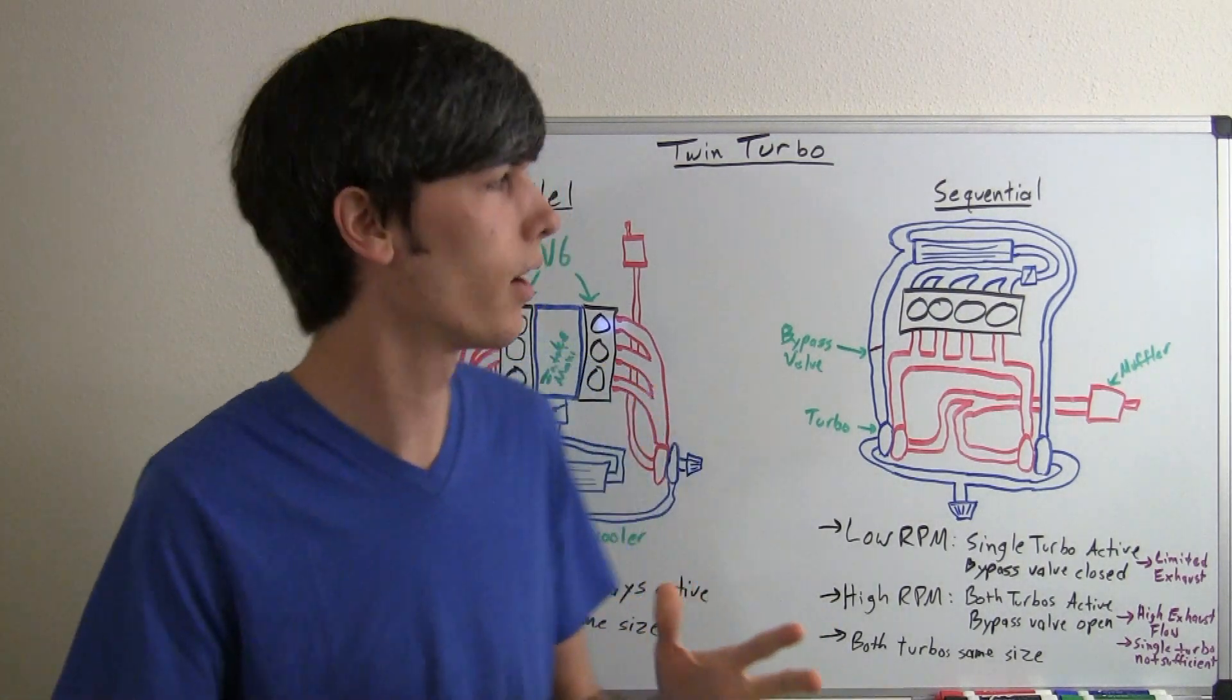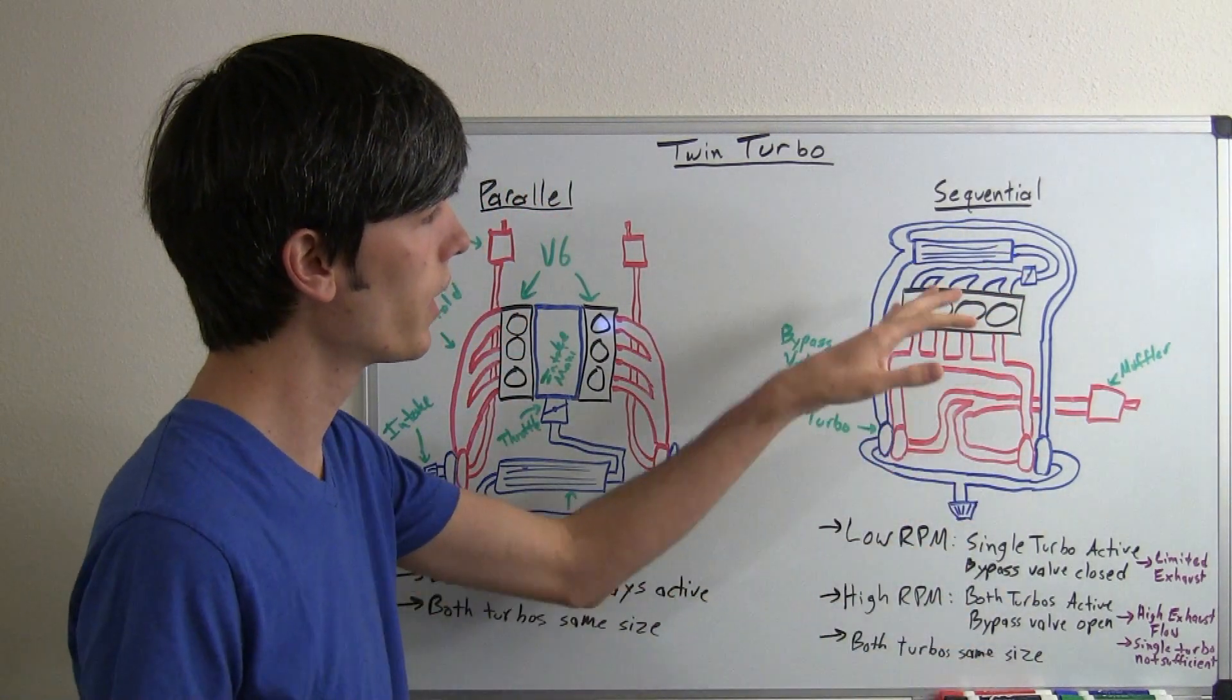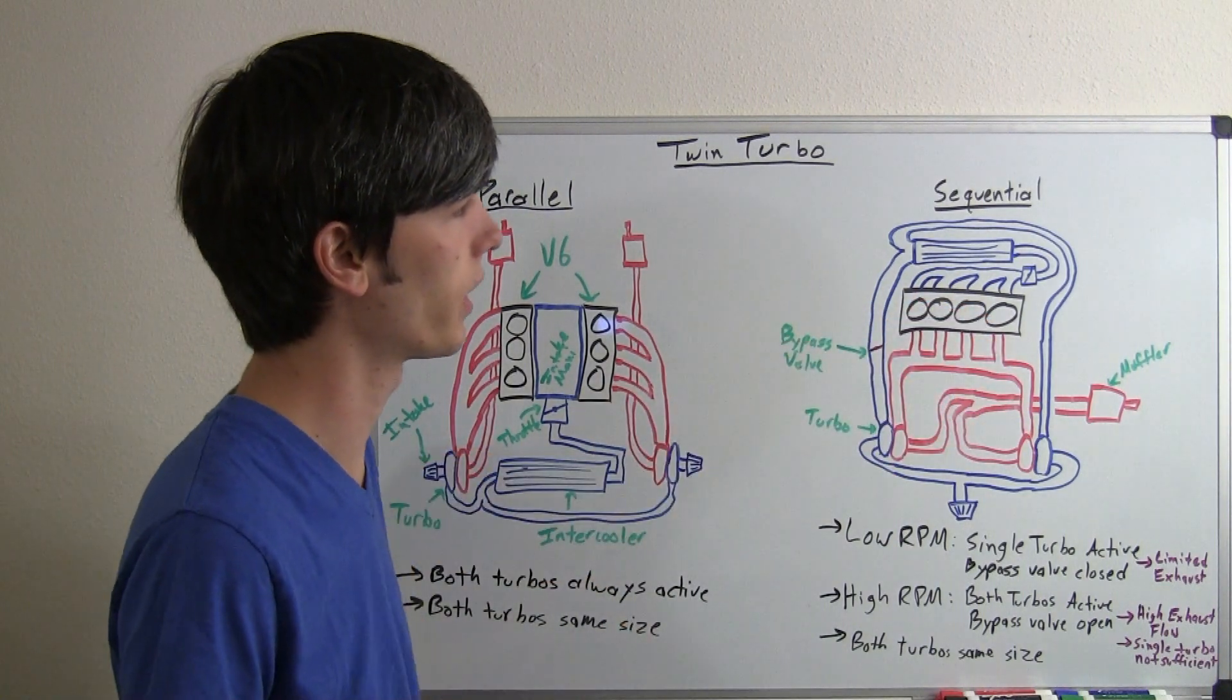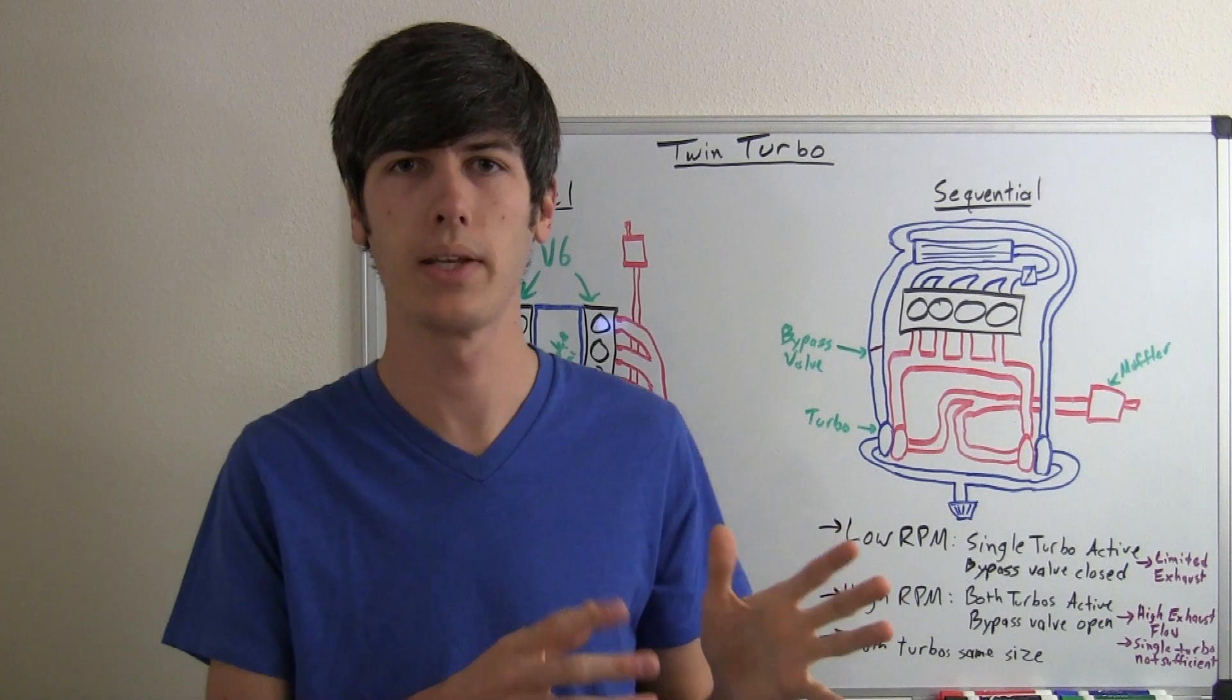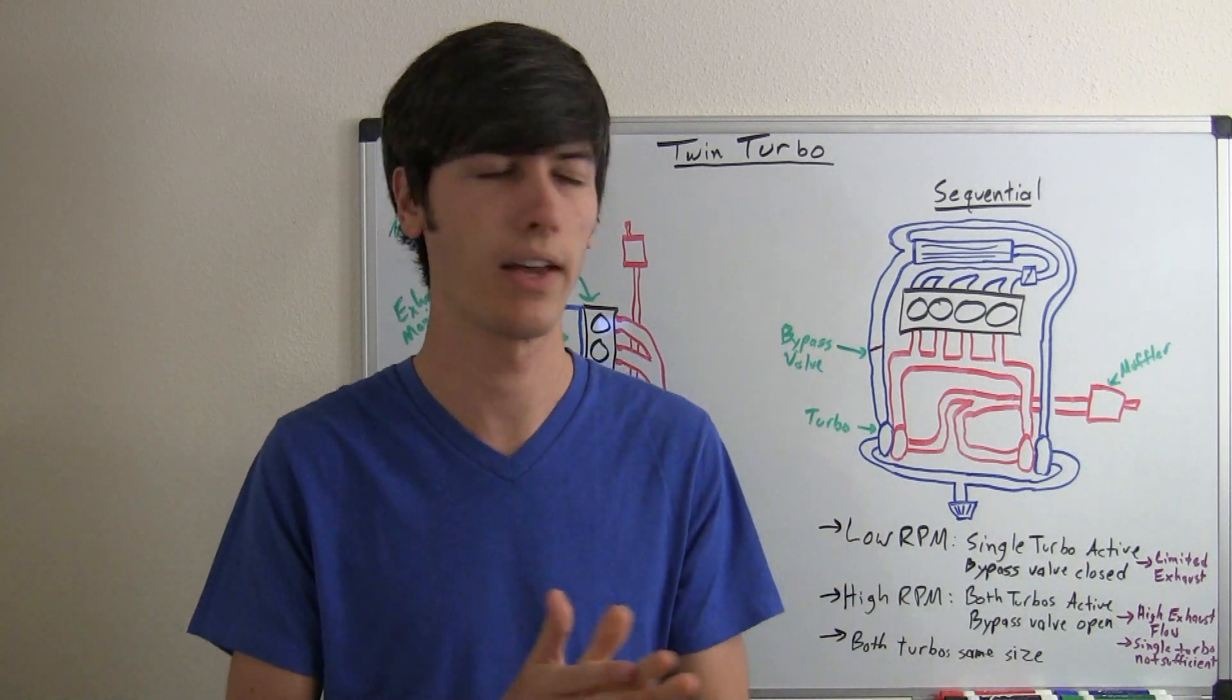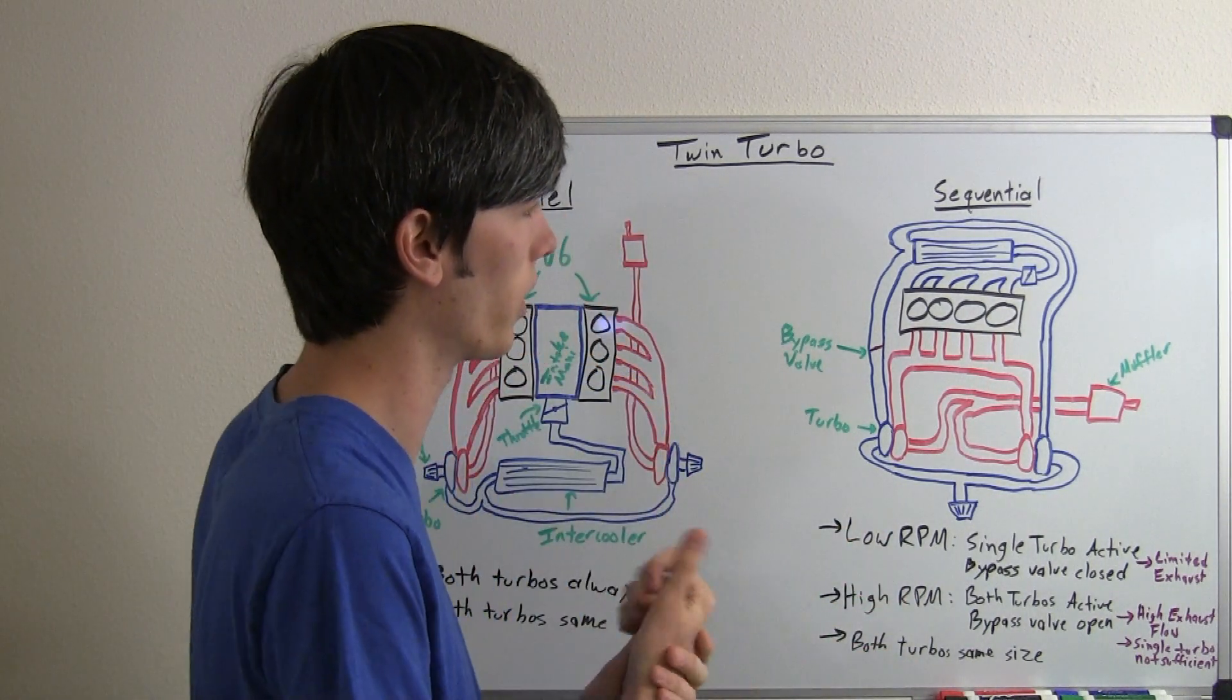Now another type of turbo setup is sequential. So, here we've got a four cylinder engine, and basically what happens here is you have one turbo active at low RPM, and then both turbos active at a higher RPM when you have more exhaust flow.